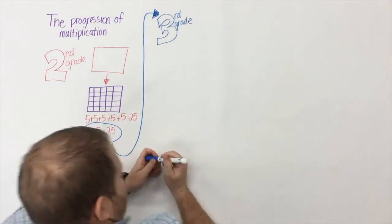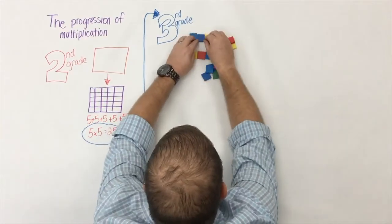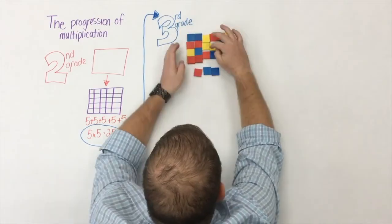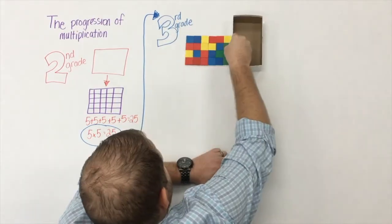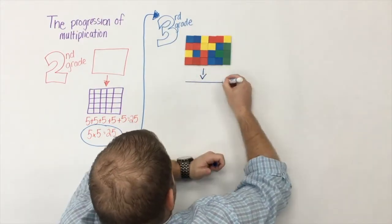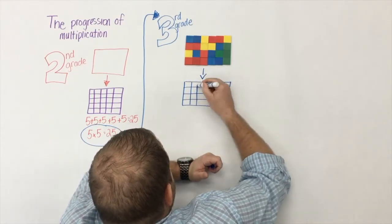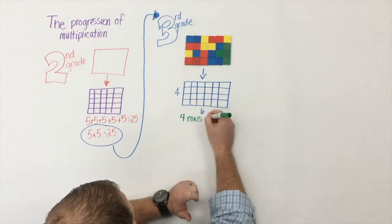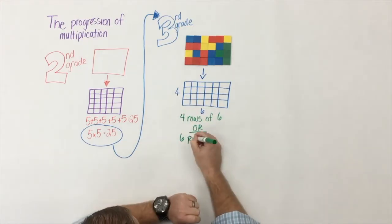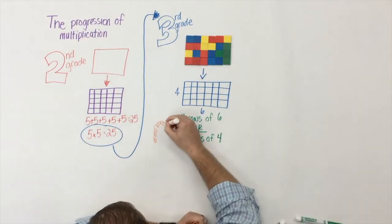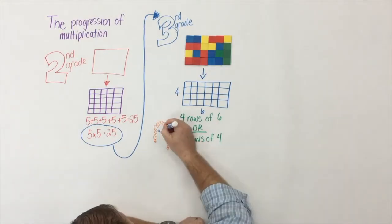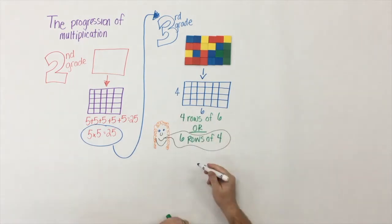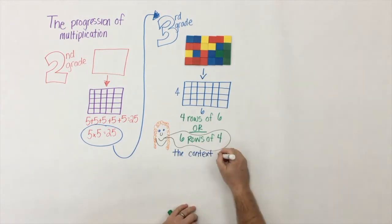In third grade, students take the understanding they began to develop in second grade and begin to construct arrays using square color tiles or any manipulative. The important piece is that once they've actually constructed that model, they draw a pictorial representation which matches their model. Here we have four rows of six, or it could also be seen as six rows of four, depending on how you turn the model.